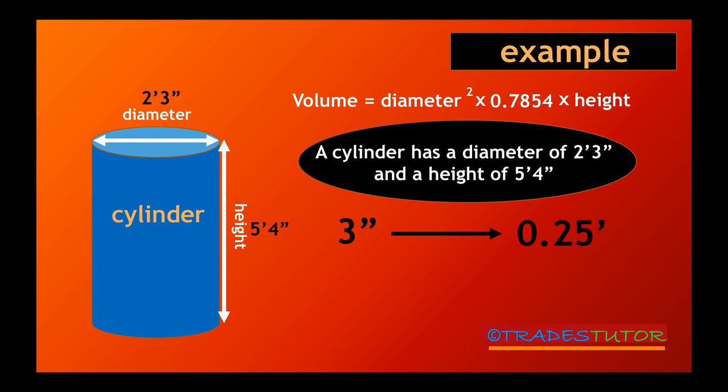How we did that? We went 3 divided by 12, and 12 being the number of inches in a foot. We're just converting it to feet. Same for the 4. Same concept. Now we have numbers we can use. So we can go 2.25 feet and 5.33 feet.